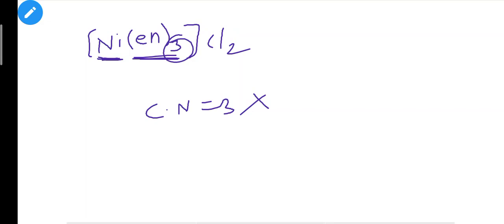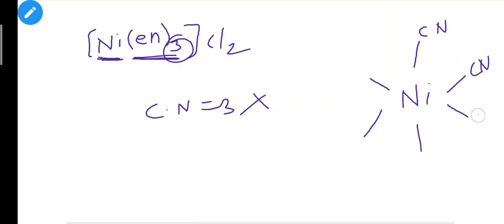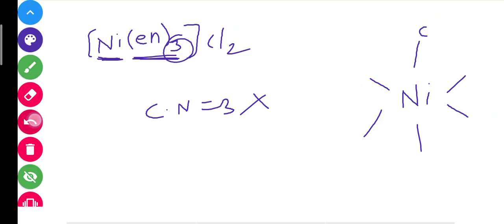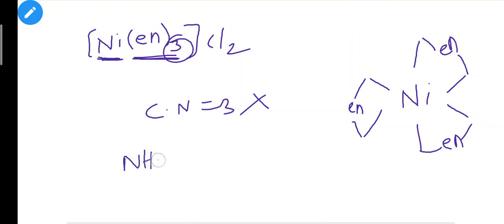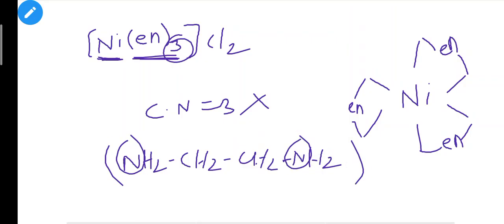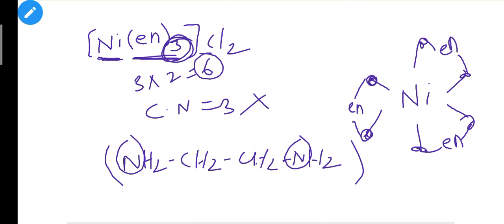A bidentate ligand has 2 donor atoms. One CN gives one bond, but ethylenediamine (en) has 2 donor atoms — so in one ethylenediamine, there are 2 bonding positions. With 3 ethylenediamine ligands, each occupying 2 positions, that gives 3 times 2 equals 6. So the actual coordination number is 6. This is the bidentate ligand — it counts as 2 in the coordination number.